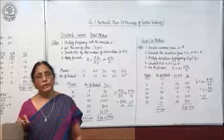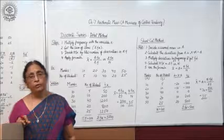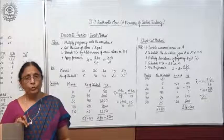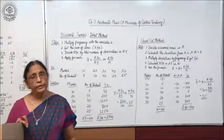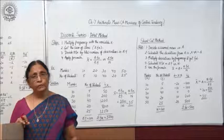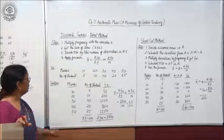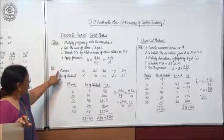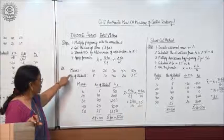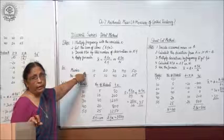Children, now we will take the calculation of arithmetic mean in case of discrete series. As I told you earlier, discrete series means the values having the frequency, or the items having the frequency. So here the marks and number of students — the frequency is given along with the items.